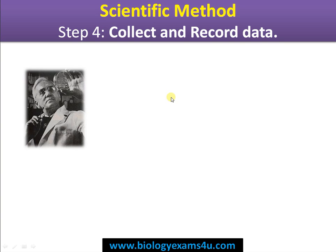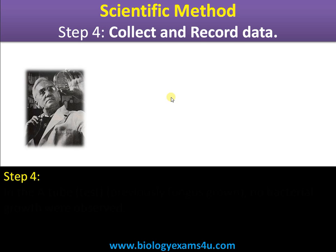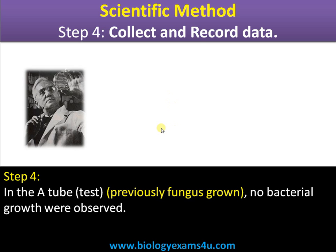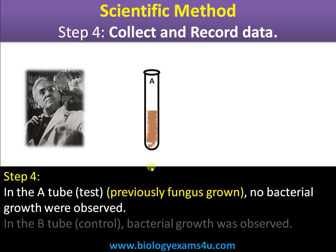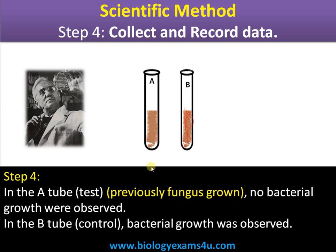Step 4: Collect and record data of the experiment. The data showed that in tube A — the previously fungal-grown tube — no bacterial growth was observed, whereas in tube B bacterial growth was observed. This was the key observation from Fleming's experiment.